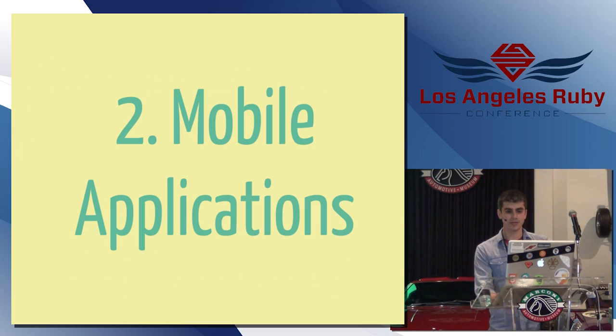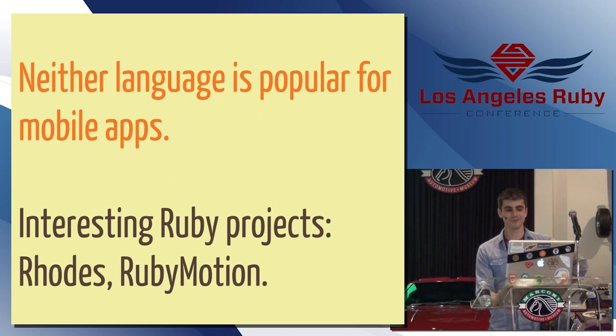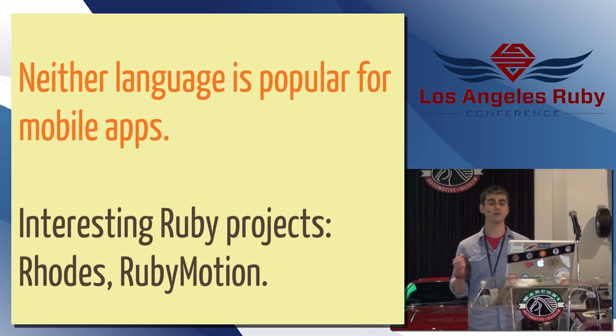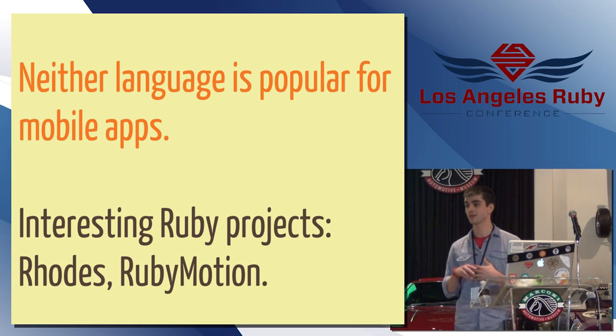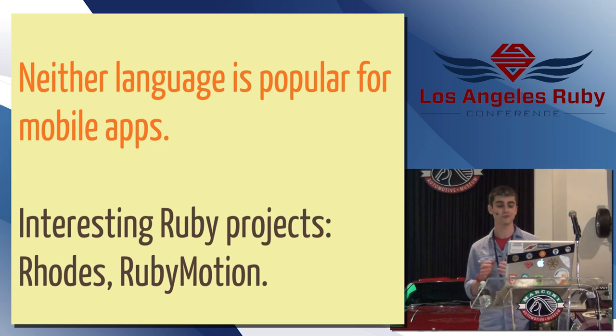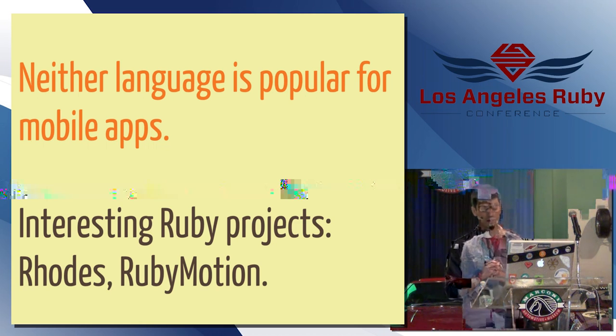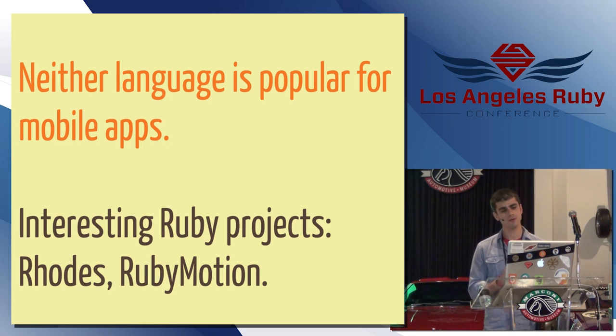Let's look at mobile applications real quick. Well, neither language is really that popular for mobile apps, but there are some pretty cool Ruby projects. There's row mobile roads, which lets you use a Rails type of paradigm to make cross-platform mobile apps. There's RubyMotion, which has definitely been making the rounds at conferences lately, and that's really cool for building iOS apps in Ruby as well. So I would say maybe Ruby is a little bit ahead here, but I wouldn't say that either language is hugely popular for mobile apps.